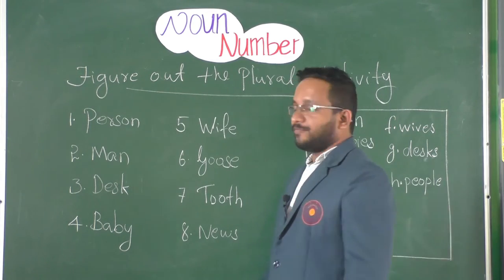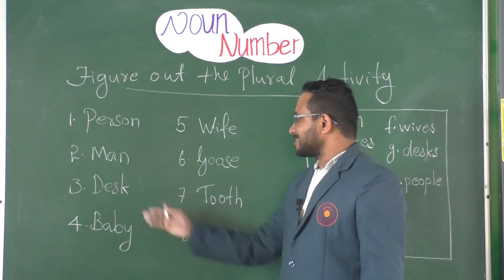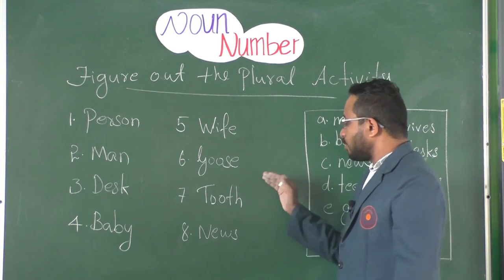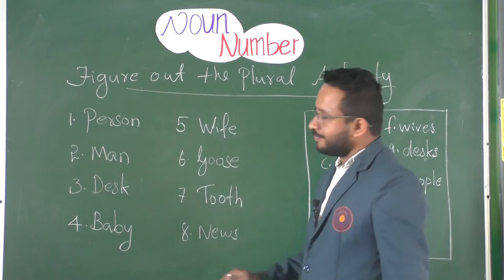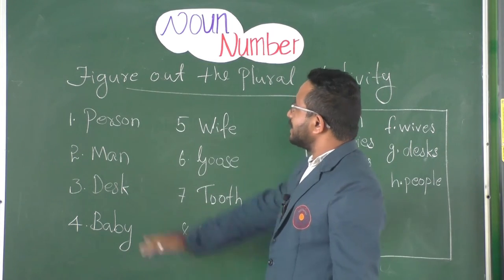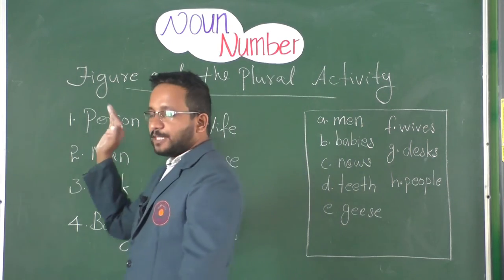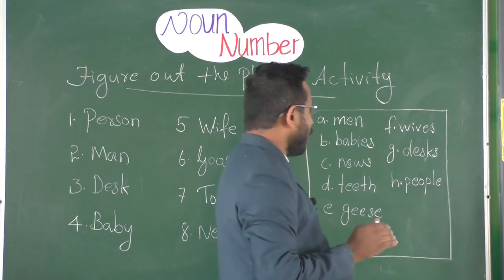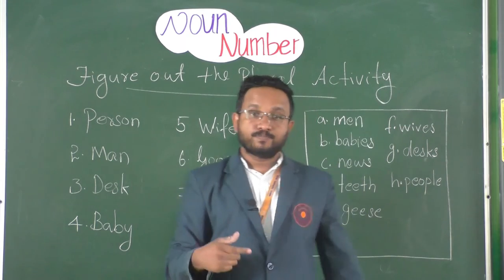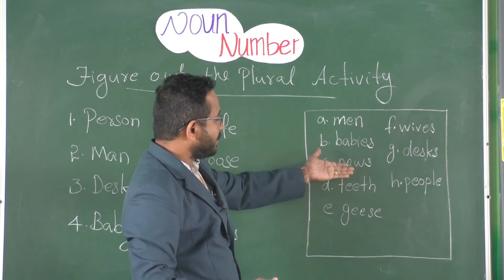Now let's see an activity named 'Figure Out the Plural'. Let's look at the words: person, man, desk, baby, wife, goose, tooth, news. All these are singular. Now you have to find out the plural of the same. Let's take the first word — person.